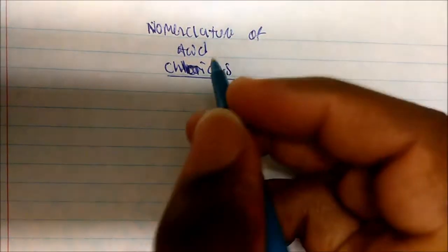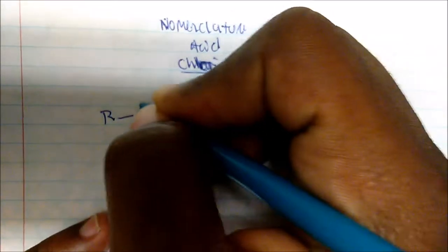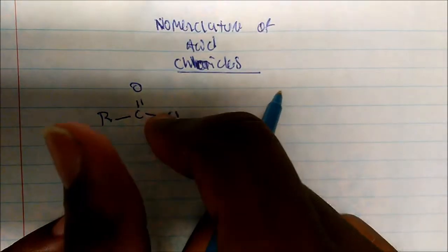Let's talk about the nomenclature of acid chlorides. Acid chlorides are usually some sort of R group bonded to a carbon that's double bonded to an oxygen that has this Cl group here. That's a typical formula for an acid chloride, so let's get right into it.